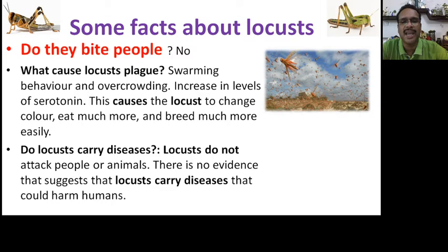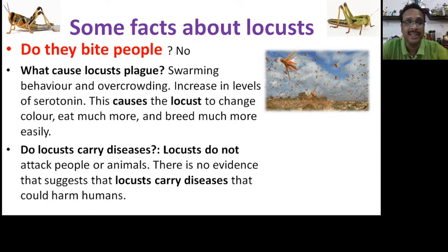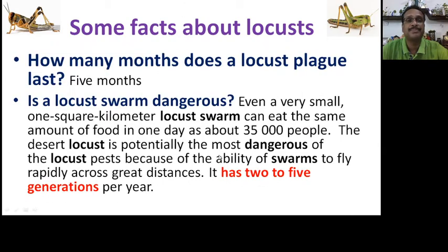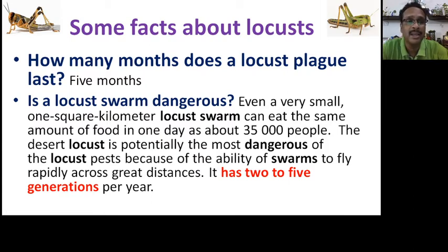Do locusts carry diseases? Locusts don't attack people or animals, and there is no evidence that they carry diseases. Even in the COVID era, when large numbers of locusts were present, there was no evidence that they harmed animals, birds, or human beings. So there is no known disease risk, though one can never be entirely certain.